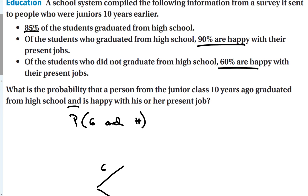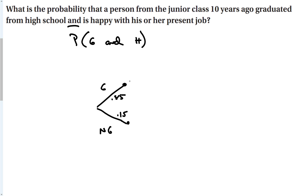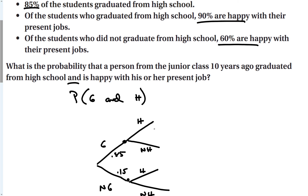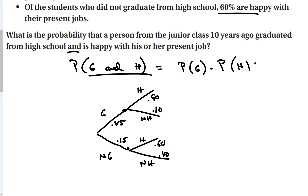We'll make a tree diagram. The first branch: you graduated (0.85) or you didn't graduate (0.15). From each branch, you're either happy with your job or not. Of those who graduated, 90% are happy, 10% are not. Of those who did not graduate, 60% are happy, 40% are not. To find P(graduated and happy), that equals the probability they graduated times the probability they are happy given they graduated: 0.85 times 0.90.